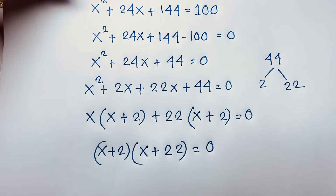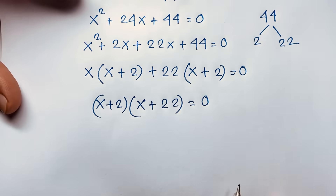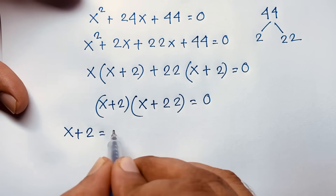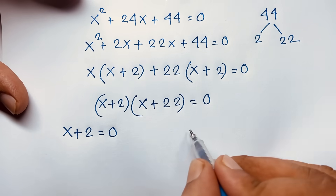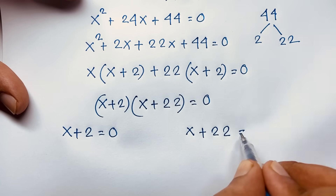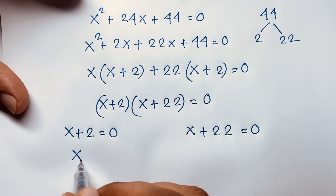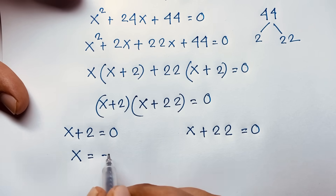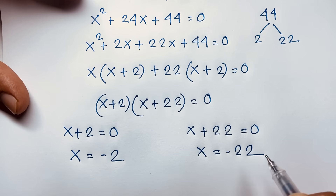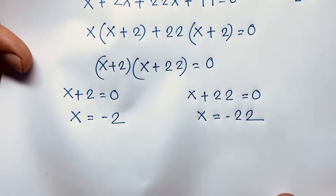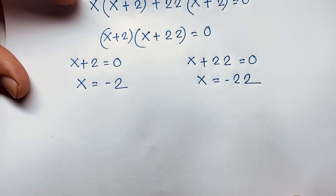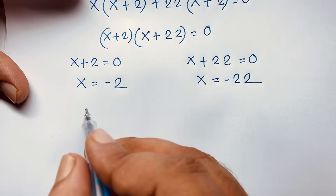So we are finding out two cases. Our first case is x + 2 = 0 and the other case is x + 22 = 0. Now x is equal to minus 2 and x is equal to minus 22. This is our final answer in this maths problem.